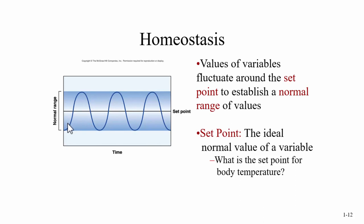Think about a thermostat. When we have a set point — maybe 72 degrees — when we start to go above 72 degrees, the thermostat is going to kick on the air conditioner to cool it down. If it drops too far below 72 degrees, it'll tell the furnace to kick on and warm it up. We have a few things to look at with homeostasis, and we'll get into the different mechanisms.